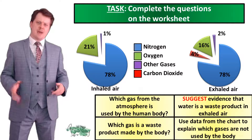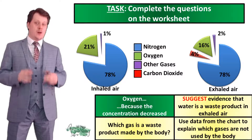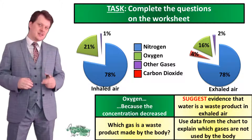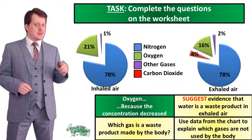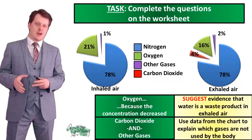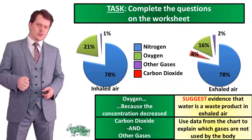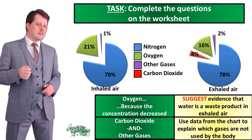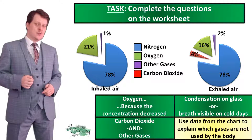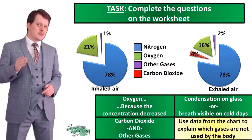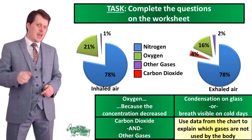Which gas from the atmosphere is used by the human body? That's oxygen — we know this because the oxygen concentration has decreased. The gases which are waste products, looking at the pie charts, are carbon dioxide because it's increased, and other gases because that has also increased. The evidence that water makes up some of that 2% of other gases is that when you breathe onto a piece of glass you get condensation formed, and on cold days your breath is visible when you exhale.